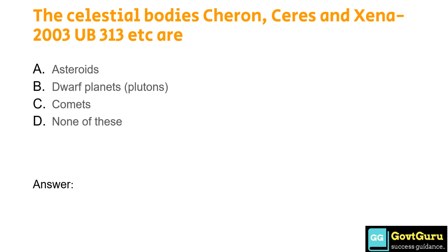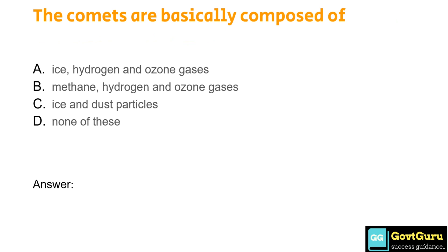The celestial bodies Charon, Ceres and Eris (2003 UB313) etc. are: Option A: Asteroids, Option B: Dwarf planets (plutons), Option C: Comets, Option D: None of these. The answer is Option B, dwarf planets/plutons. Comets are basically composed of: Option A: ice, hydrogen and ozone gases, Option B: methane, hydrogen and ozone gases, Option C: ice and dust particles, Option D: none of these. The answer is Option C, ice and dust particles.